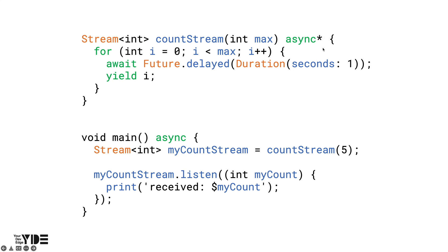To create an async generator function, use the async star keyword. The async star keyword allows you to use the yield keyword within a function. Yield inside countStream pushes int i into the stream. That is, countStream pushes data to the stream every one second while looping the for loop as many times as max given as an argument.